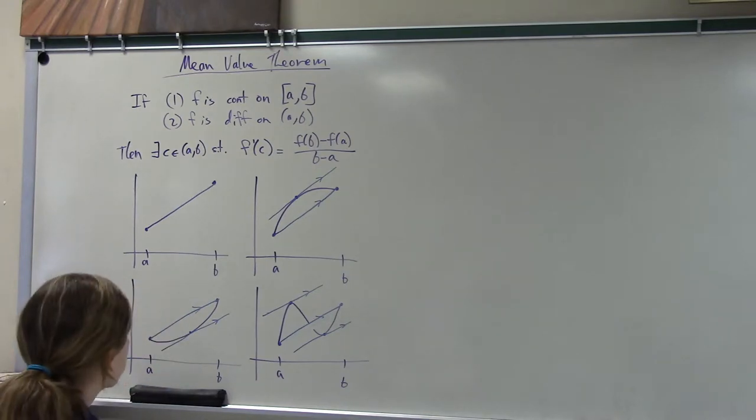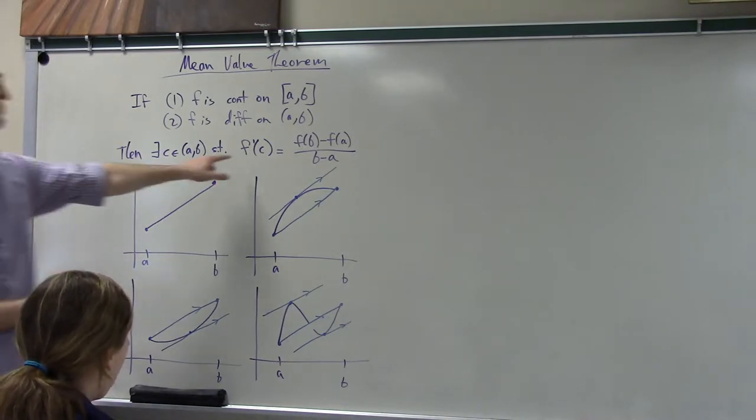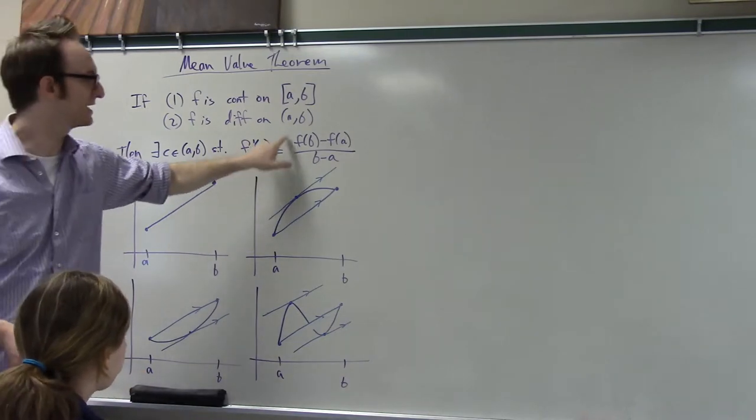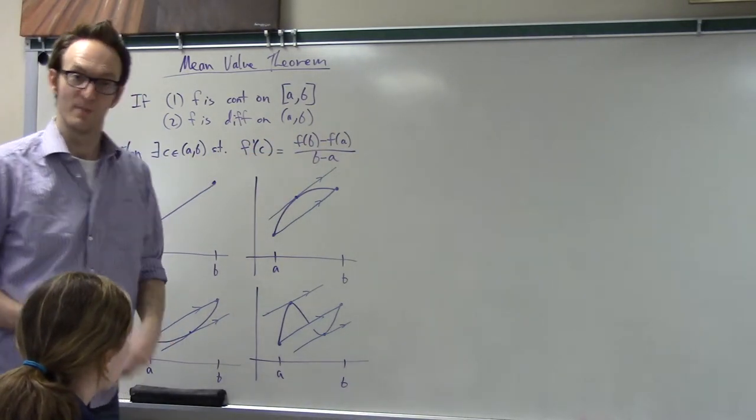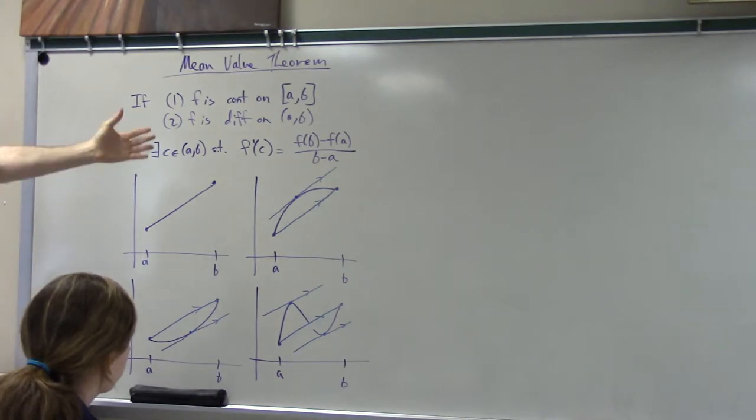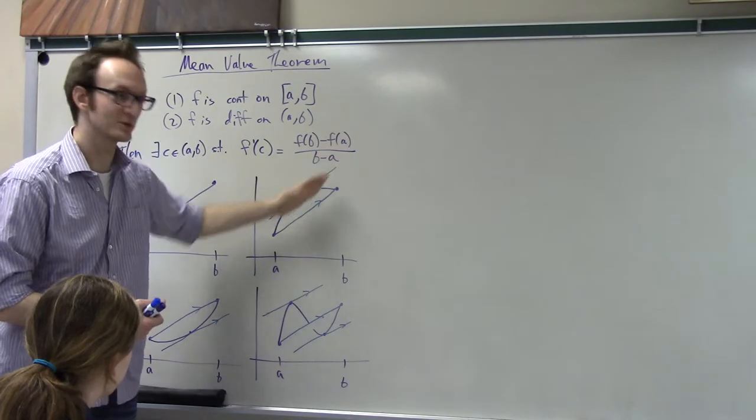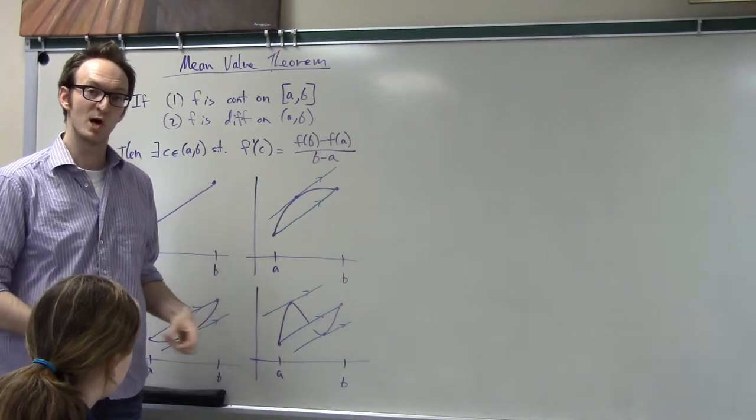You can really think about this theorem in three different ways. On the one hand, it's just a simple statement. Hey man, somewhere on here, the derivative has to equal this number. But a geometric interpretation of the mean value theorem is what I've presented here. Somewhere on the interval, the slope of the tangent line is equal to the slope of the secant line.